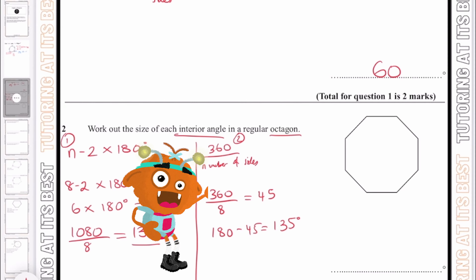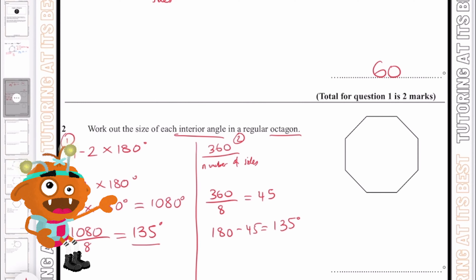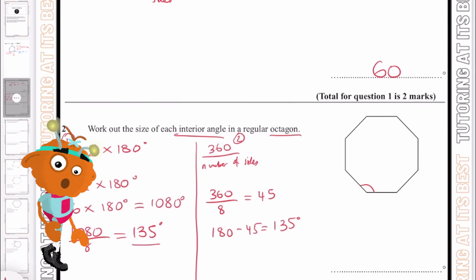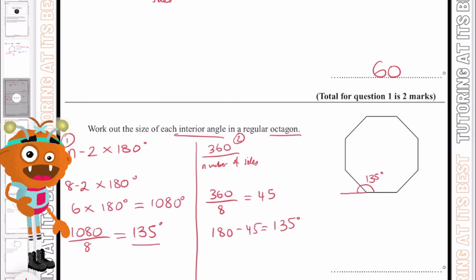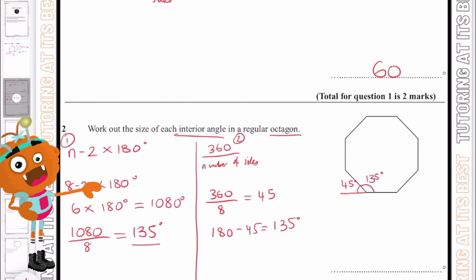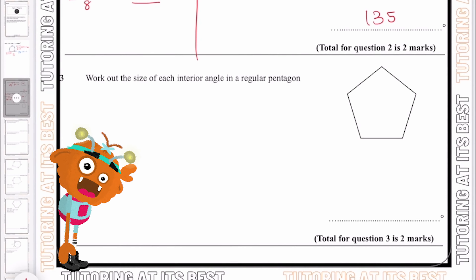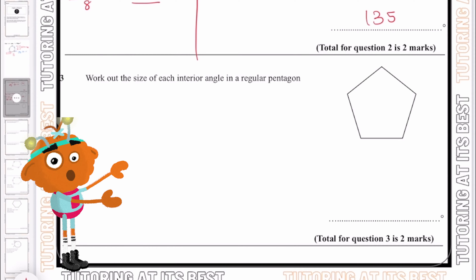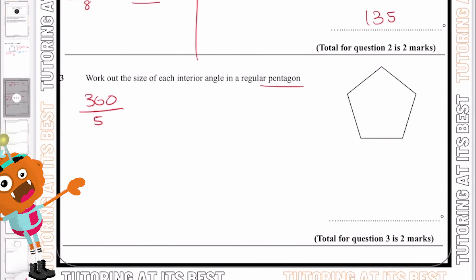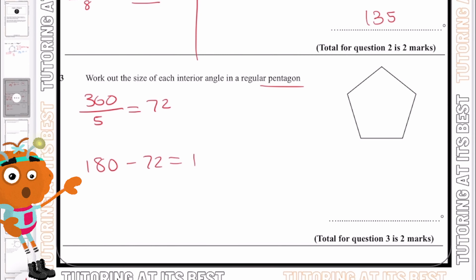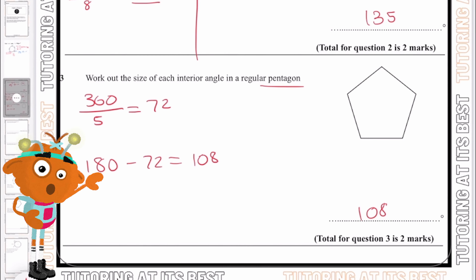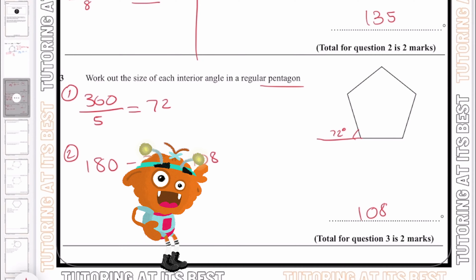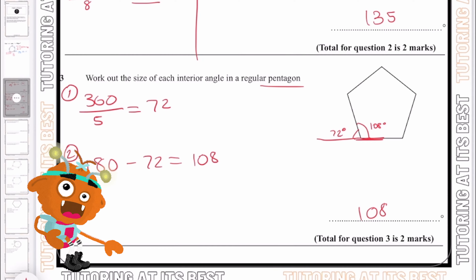Method 1 has an additional step where we calculate the total value of interior angles within the shape before dividing by the number of sides. The interior is 135 degrees — an obtuse angle — while the exterior is 45 degrees, an acute angle. For question three, the interior angle of a pentagon: 360 divided by 5 gives 72 degrees for the exterior, then 180 minus 72 gives 108 degrees as the interior angle.